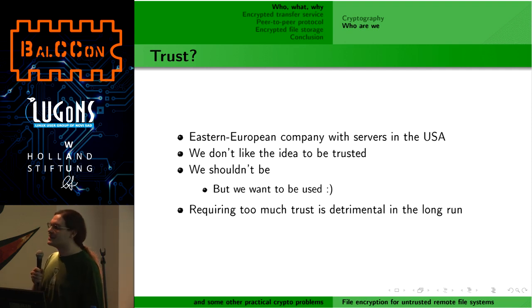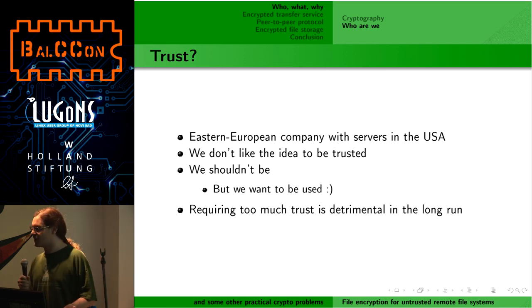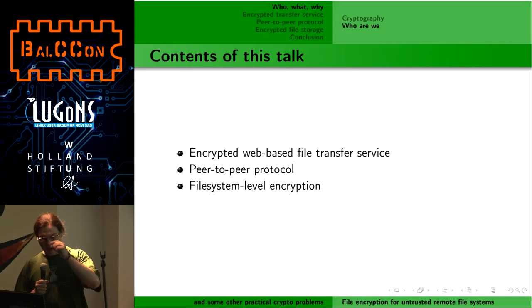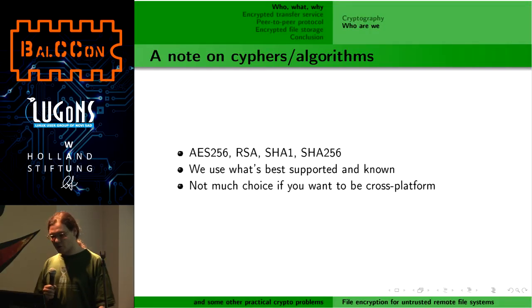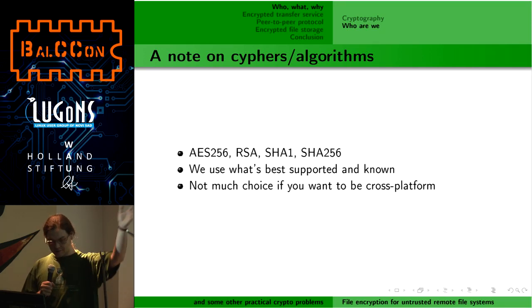Why do we do this at all? We are an Eastern European company with servers in the States. Does anybody trust us? You're right, you shouldn't. We don't want you to trust us, but we want the services to be used. Requiring too much trust is a bad idea. I am going to talk about three things: an encrypted file transfer service, a peer-to-peer protocol, and a file system level encryption. In all of these services we use very basic, known primitives — ciphers and hash functions.